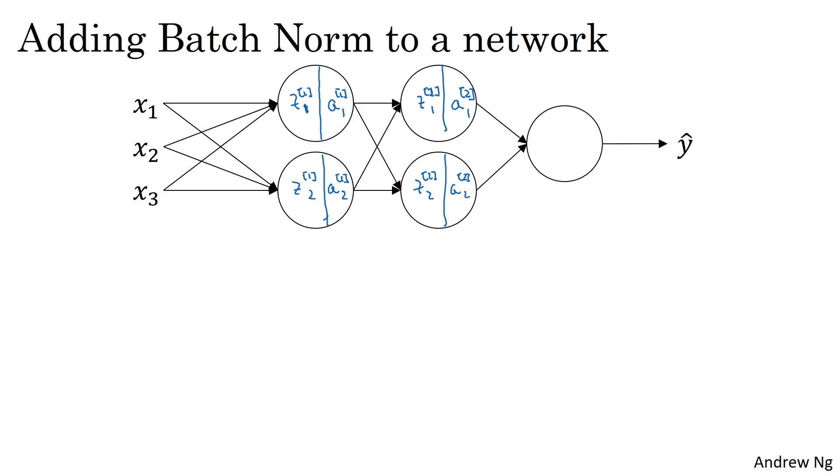If you were not applying batch norm, you would have an input x feed into the first hidden layer, and then first compute z1. This is governed by the parameters w1 and b1. And then ordinarily, you would feed z1 into the activation function to compute a1.